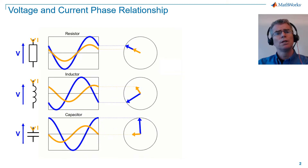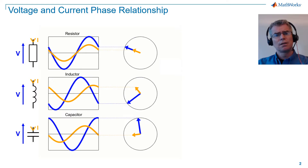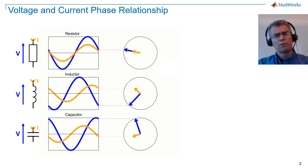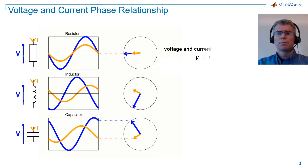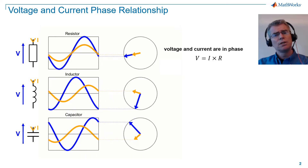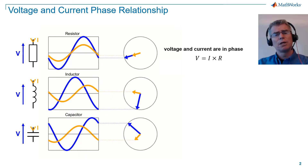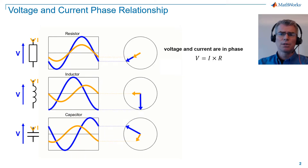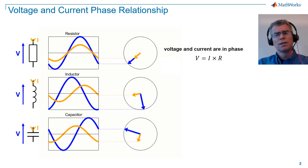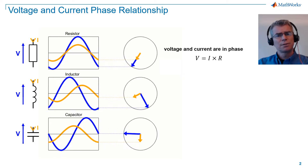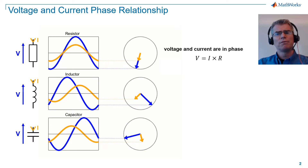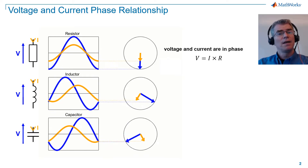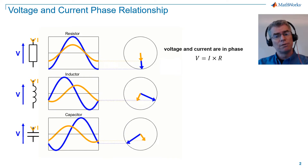Voltage is colored blue and current is colored orange. For a resistor, voltage and current are in phase, and the relationship between voltage and current is described by V equals I times R, where V is voltage, I is current, and R is resistance. Being in phase means that the zero crossings of the waveforms coincide, and the vector angles are overlaid.